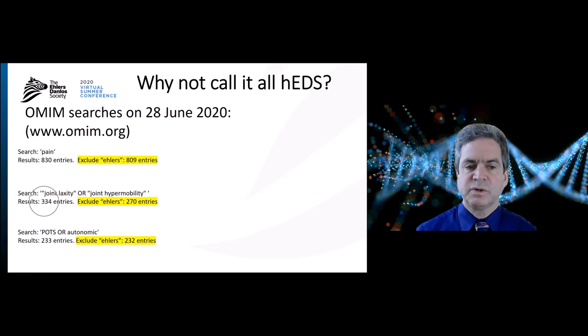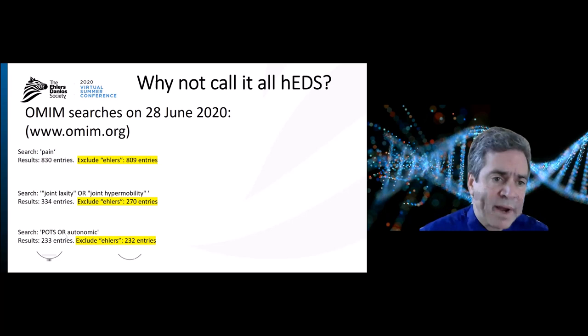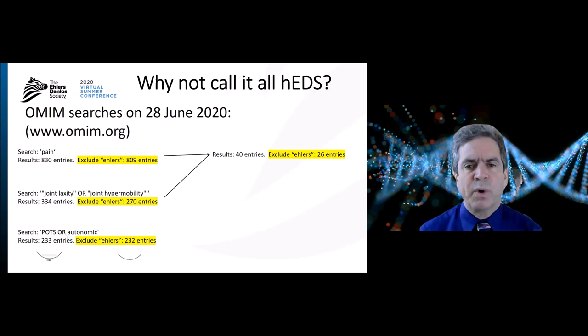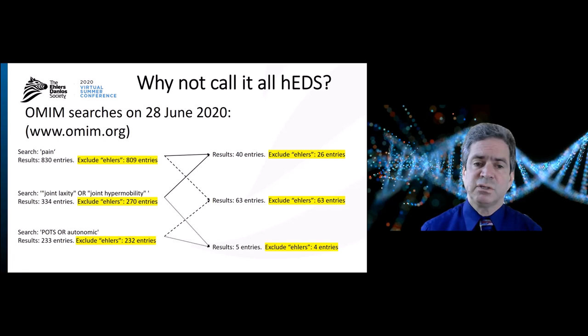If you search 'joint laxity' or 'joint hypermobility,' you get 334 entries, 270 of which are not Ehlers-Danlos syndrome. If you search 'POTS' or 'autonomic,' you get 233 hits, only one of which is a form of EDS. If you combine pain and joint laxity, there are 40 that include both, and only 14 are EDS — 26 are not. And combining pain with POTS or autonomic gives 63 hits, none of which are actually an EDS hit. Combining joint laxity with POTS or autonomic gives only five entries, four of which are not EDS.